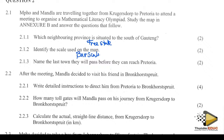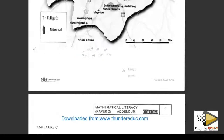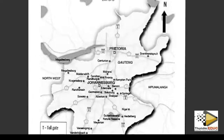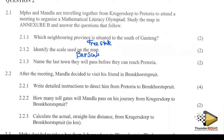Name the last town they will pass before they reach Pretoria. You can see it's Centurion — look here, they are coming from here but this one is the last town before you reach Pretoria. So the answer is Centurion.